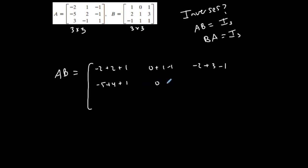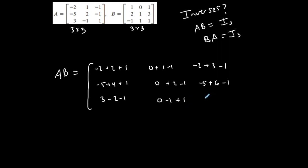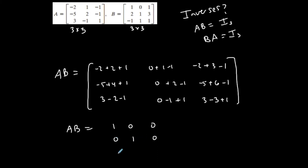Row two, column two: zero plus two minus one. Row two, column three: negative five plus six minus one. Row three, column one: three minus two minus one. Row three, column two: zero minus one plus one. Row three, column three: three minus three plus one. So AB equals the identity matrix I₃ — ones down the diagonal and zeros elsewhere. In this direction it checks out, but I need to verify the other direction as well.